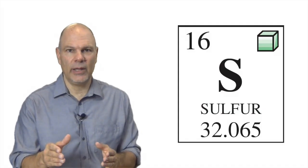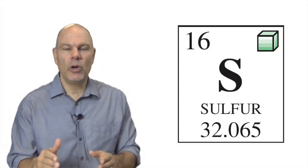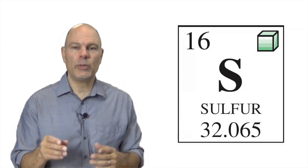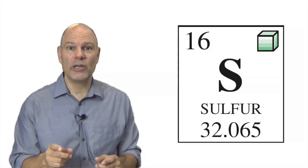You should be getting the hang of it now. So let's look at sulfur, also one of the key elements in living things. Sulfur has 16 protons and 16 neutrons. What I want you to do is click pause, draw sulfur's electron structure on a piece of scratch paper, and then hit play to see if you've got it right.